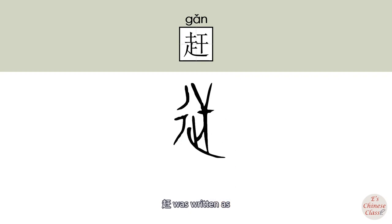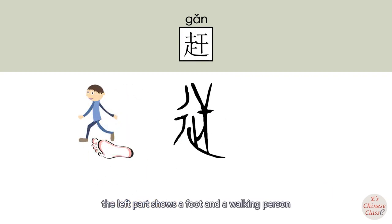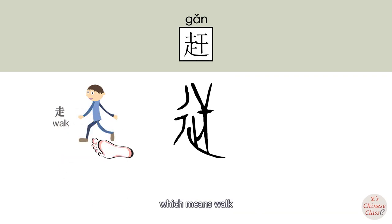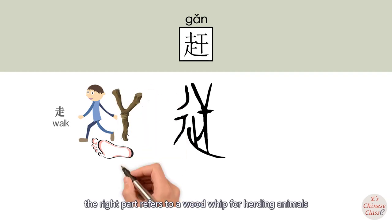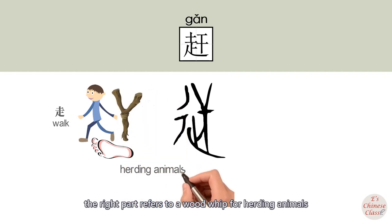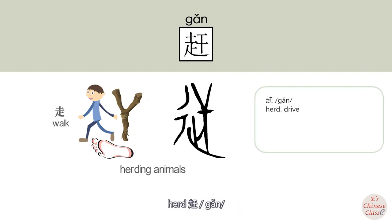赶 was written differently. The left part shows a foot and a walking person. This is another character, 走, which means 'walk.' The right part refers to a word for herding animals. So the original meaning of 赶 is 'herd.'